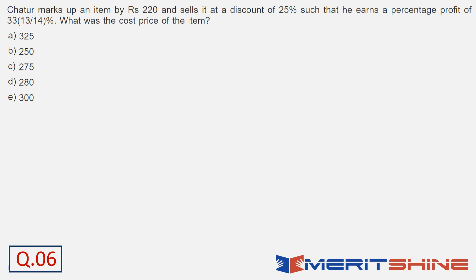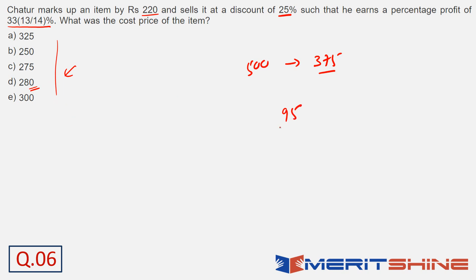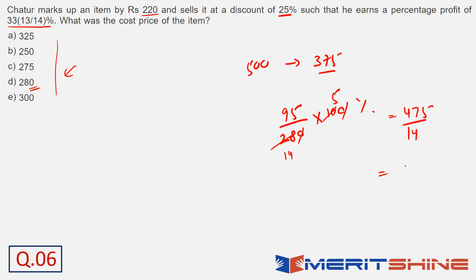Question number 6. Either you make equations or check with options. The profit percentage is 33 and 13 by 14. It looks scary, but this is a very good value — 14 in the denominator means CP would likely be a multiple of 14. Check CP as 280: markup is 220, so marked price is 500. Discount of 20% means selling price is 375. Profit is 375 minus 280 — that's 95. So 95 upon 280 into 100% equals 475 upon 14, which is 33 and 13 by 14 percent. So option D is the answer.